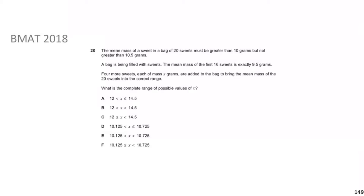Let's tackle this. The mean of 20, let's call this m20, must be greater than 10 but not greater than 10.5, so less than or equal to 10.5. The mean of the 20 is just the sum of the 20 over 20. It has to be less than or equal to 10.5 and greater than 10.